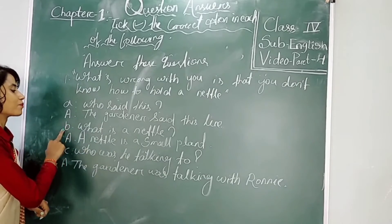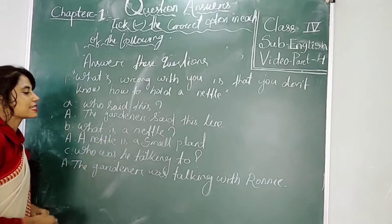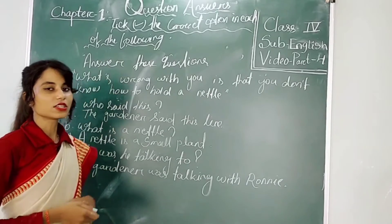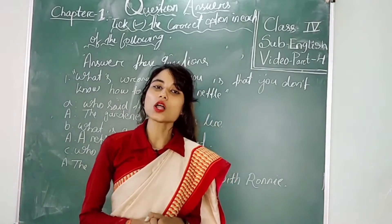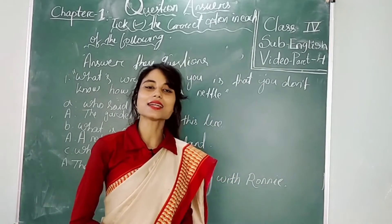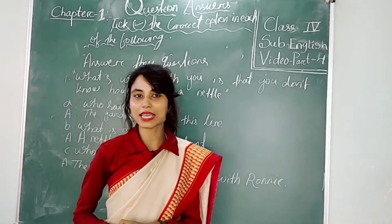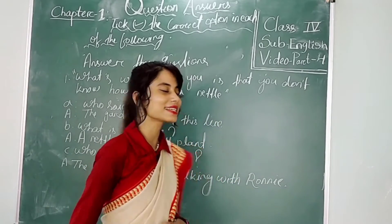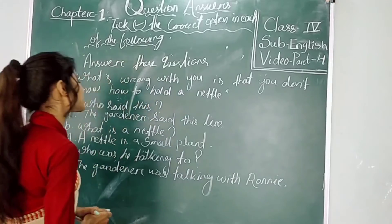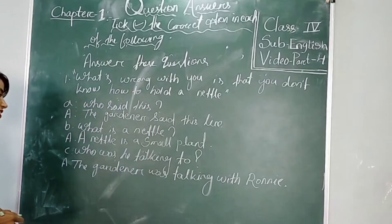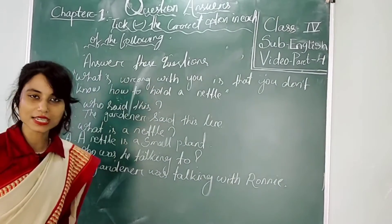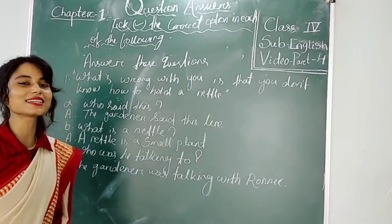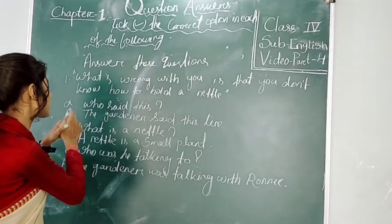So number A answer we have already discussed. Now number B — what is the detail? You know that detail is the small plant and it is standing here. So number B answer is which is the small plant. We also got the number B answer.